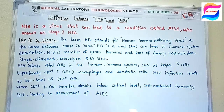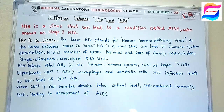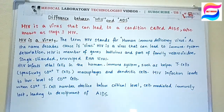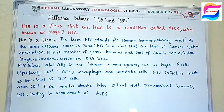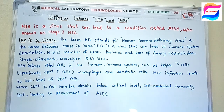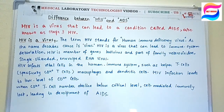HIV infection leads to low levels of CD4 cells. If a person has HIV, it is necessary to monitor their CD4+ cell count to see whether the patient is recovering, or whether declining CD4 cells indicate progression toward AIDS or stage 3 HIV. When CD4 T cell numbers decline below a critical level, cell-mediated immunity is lost, leading to the development of AIDS.